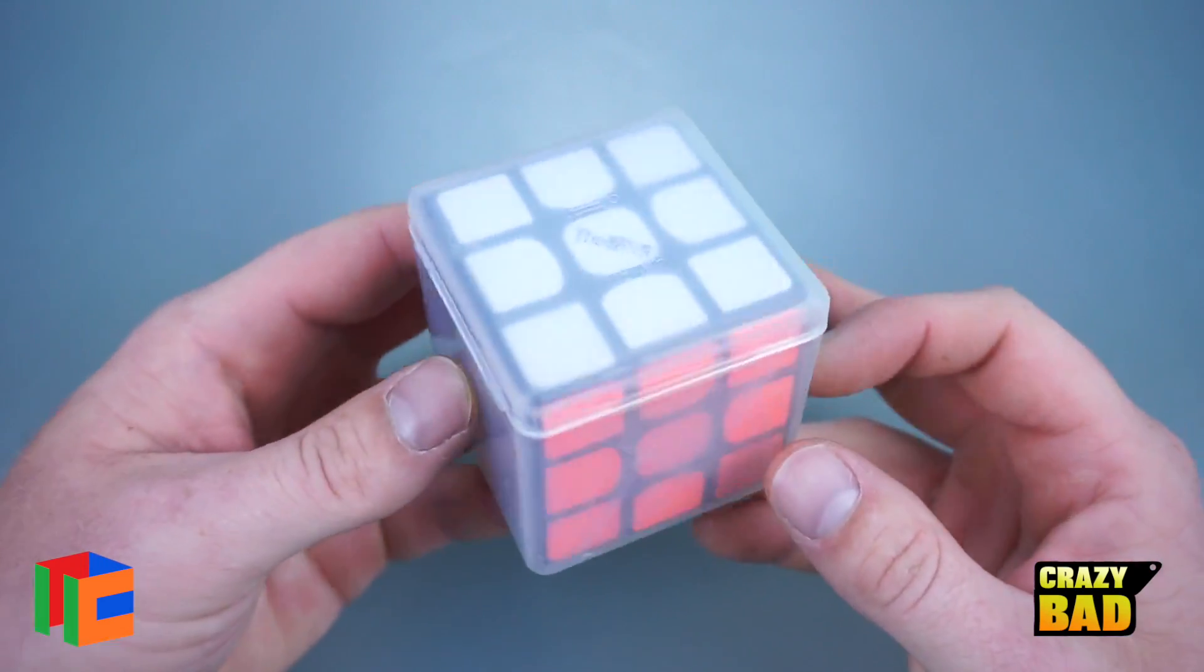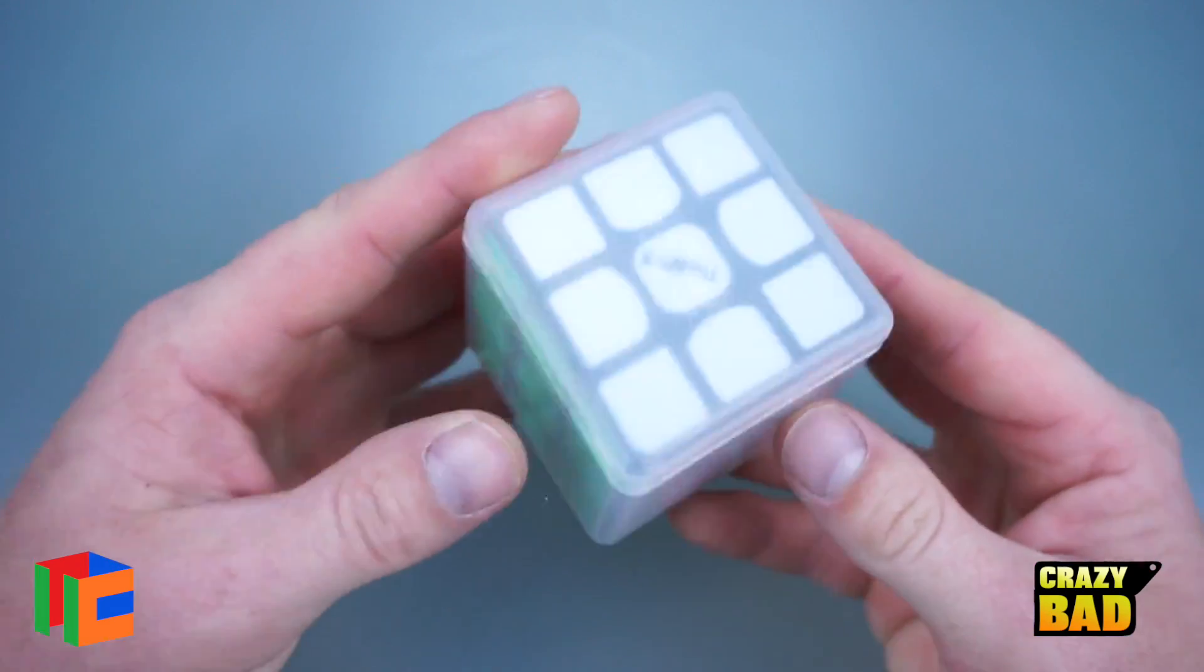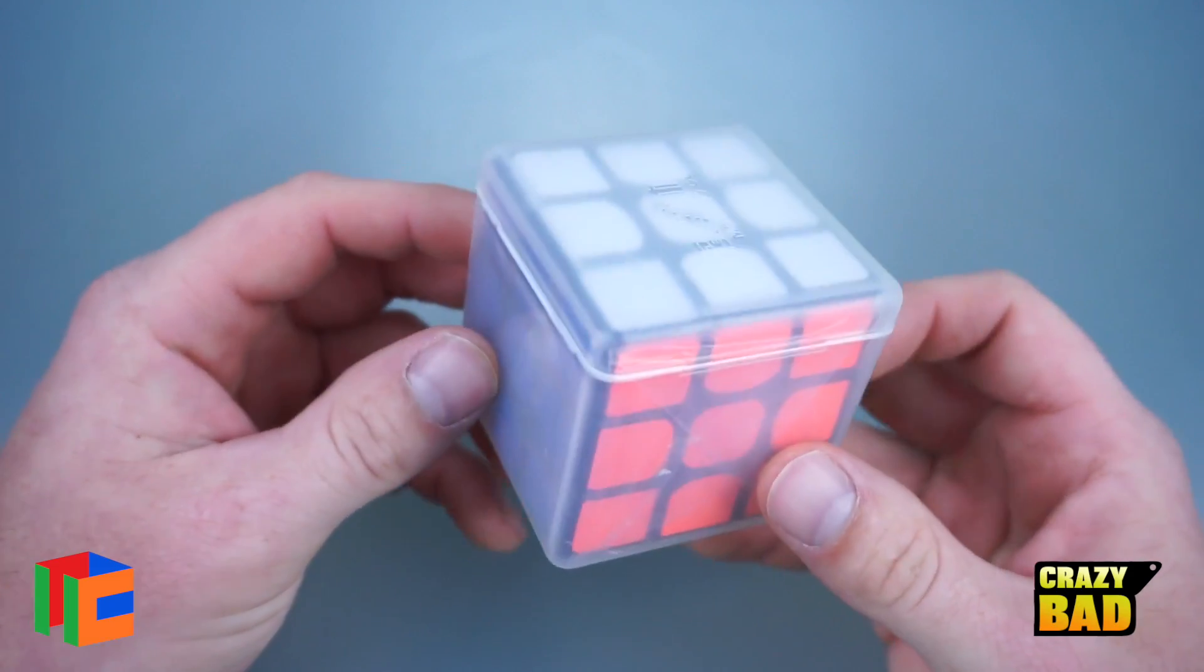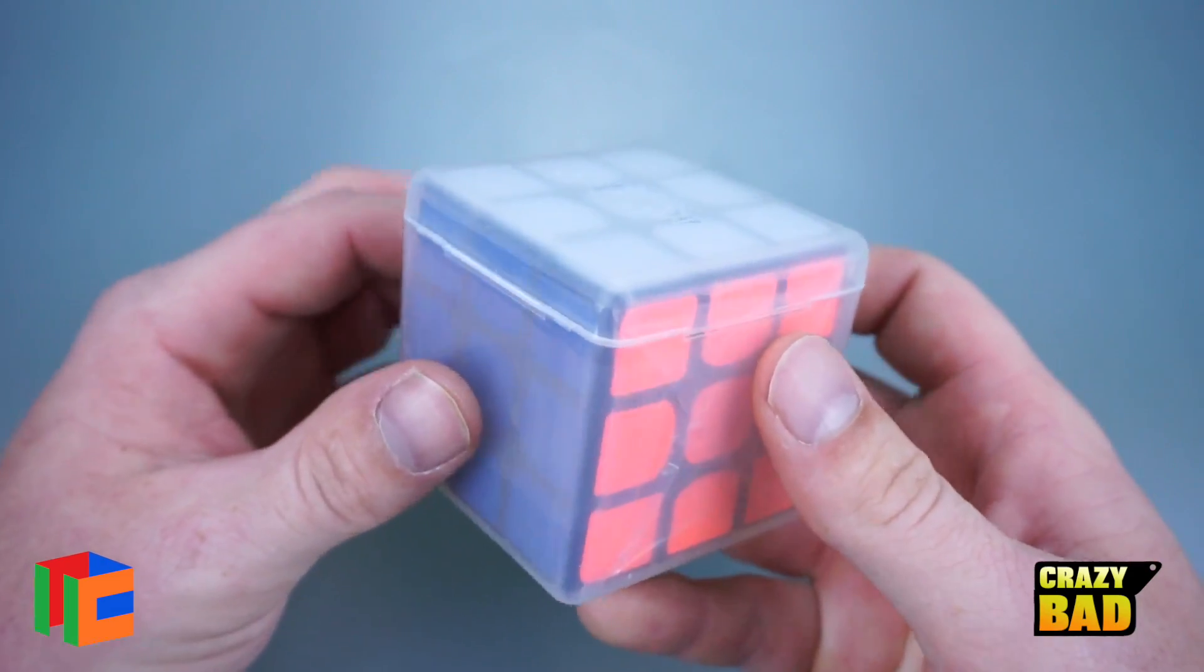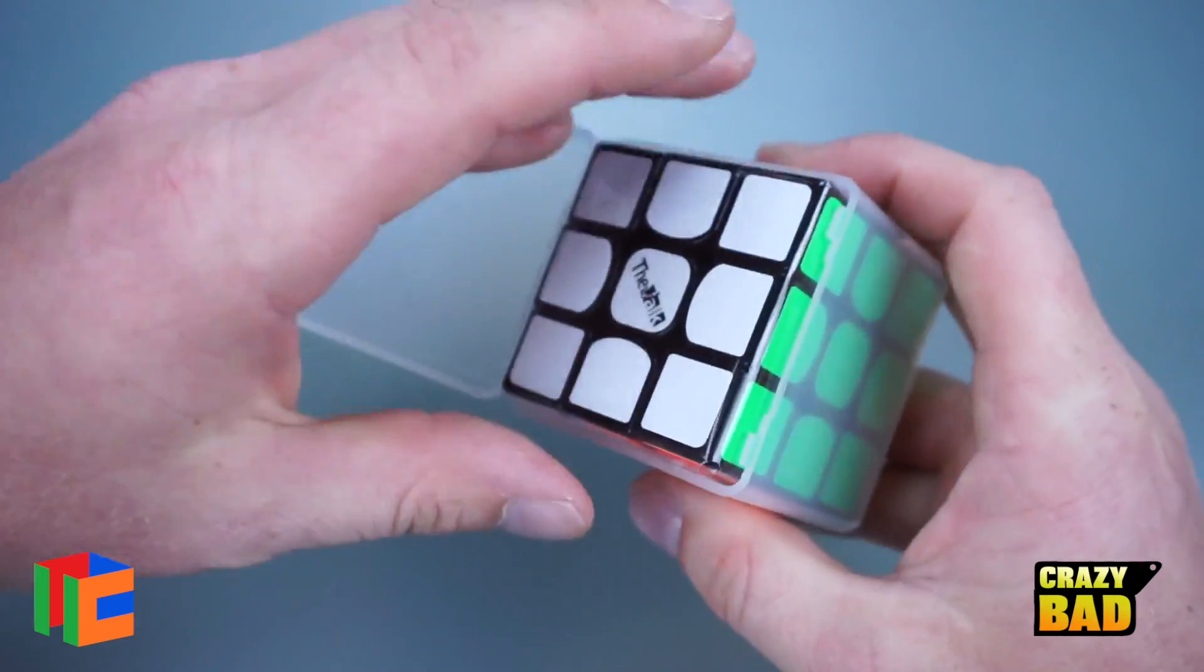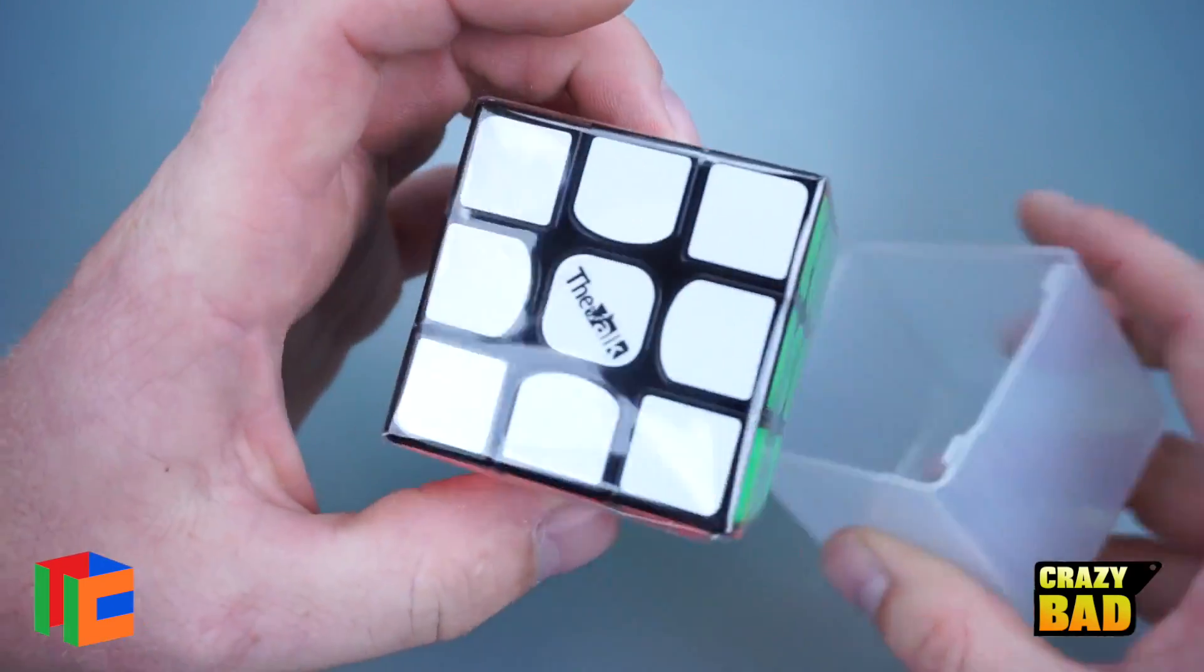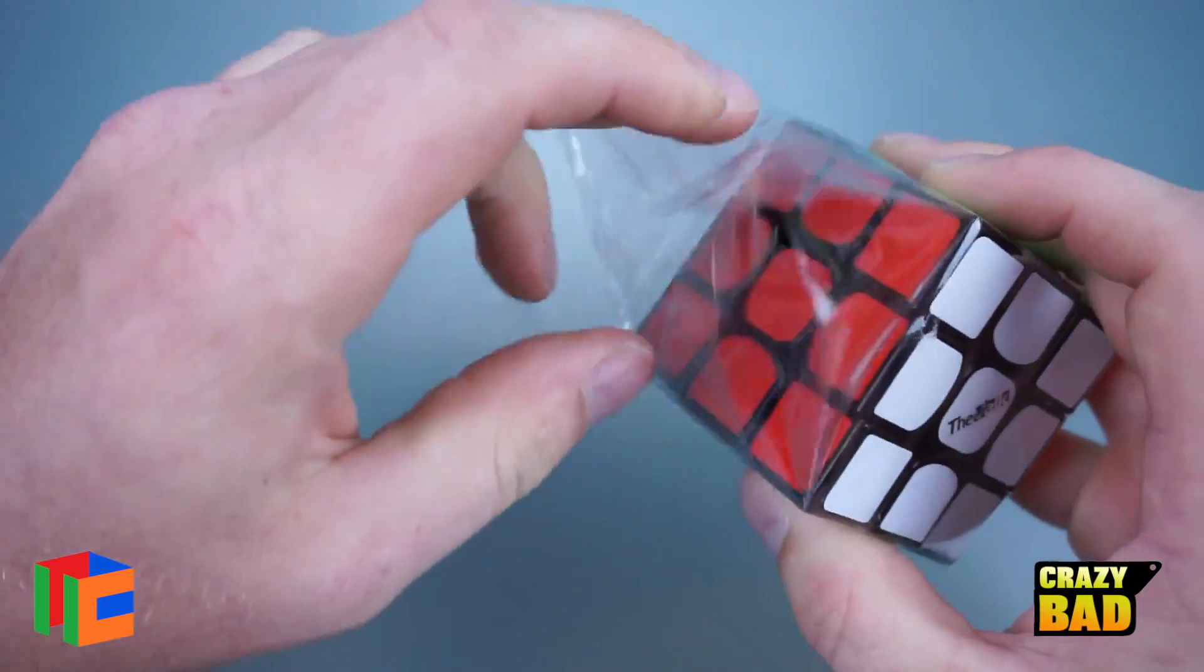Hello everybody, in today's video we're going to be taking a look at the new 3x3 from Qiyi called the Valk 3. Now this puzzle has been highly anticipated. There's been a lot of buildup about this puzzle. Basically, Qiyi has partnered up with Mats Valk and they have made a 3x3 that he has approved of. Let's go ahead, open this up.